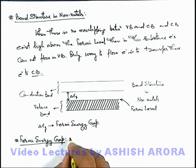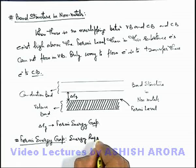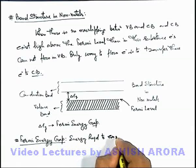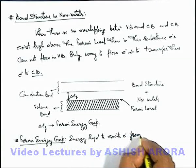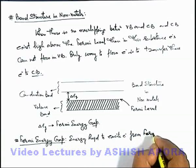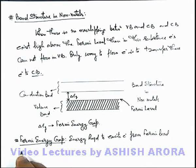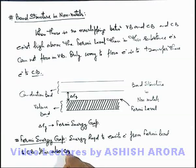The Fermi energy gap is defined as the energy required to excite electrons from the Fermi level to the conduction band. It is also sometimes called the forbidden energy gap.